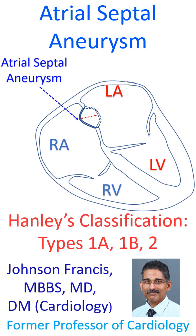Type 1a was fossa ovalis aneurysm with no motion during the cardiorespiratory cycle. Type 1b showed rapid phasic oscillation in inspiration, usually confined to the right atrium.